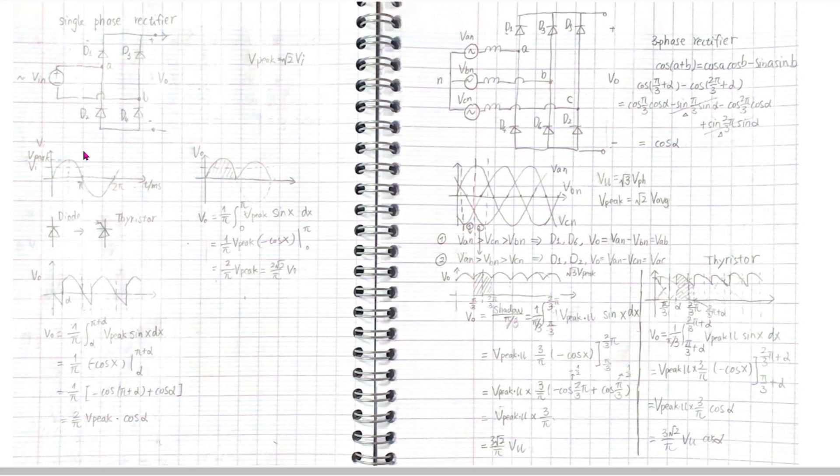During a negative half-cycle, the current flows through the path D3 load D2 and completes the circuit. The output voltage VO is the inverse of the input.